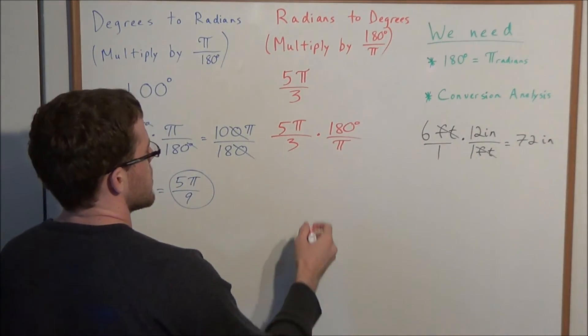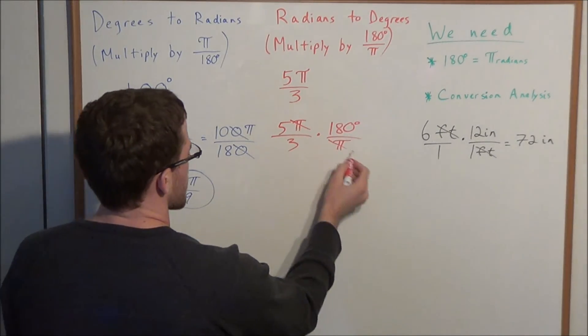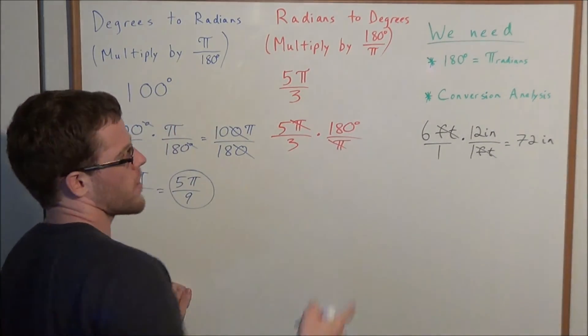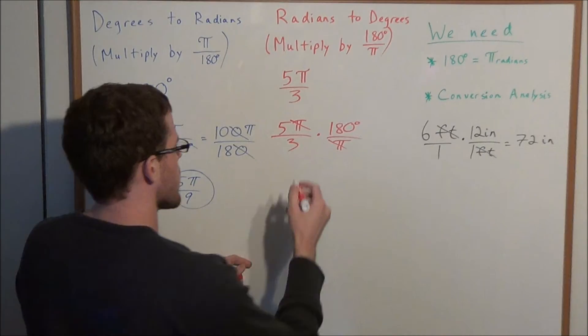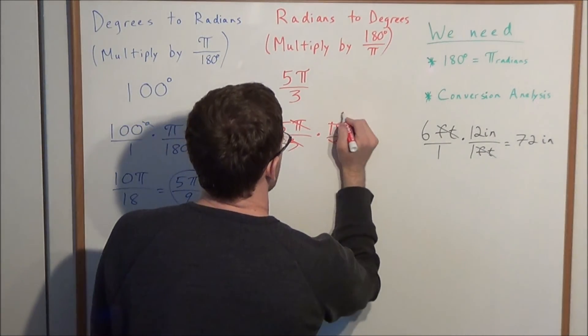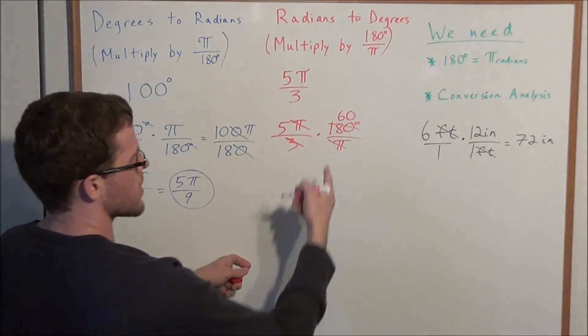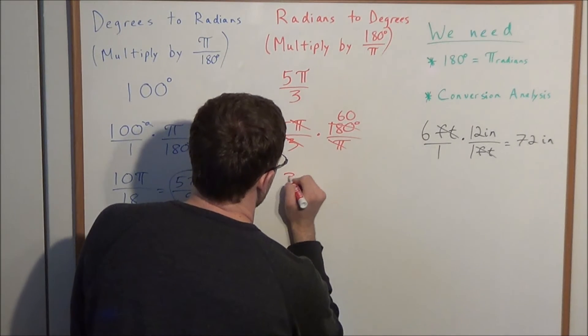So now the π's are going to cancel, and we can also simplify. We have 180 degrees divided by 3. This will simplify to 60. And now we have 5 times 60 degrees is 300 degrees.